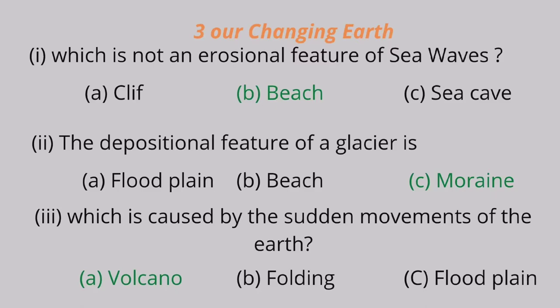Question 2: The depositional feature of a glacier is A. Flat plain, B. Beach, C. Moraine. Moraine is the correct answer.